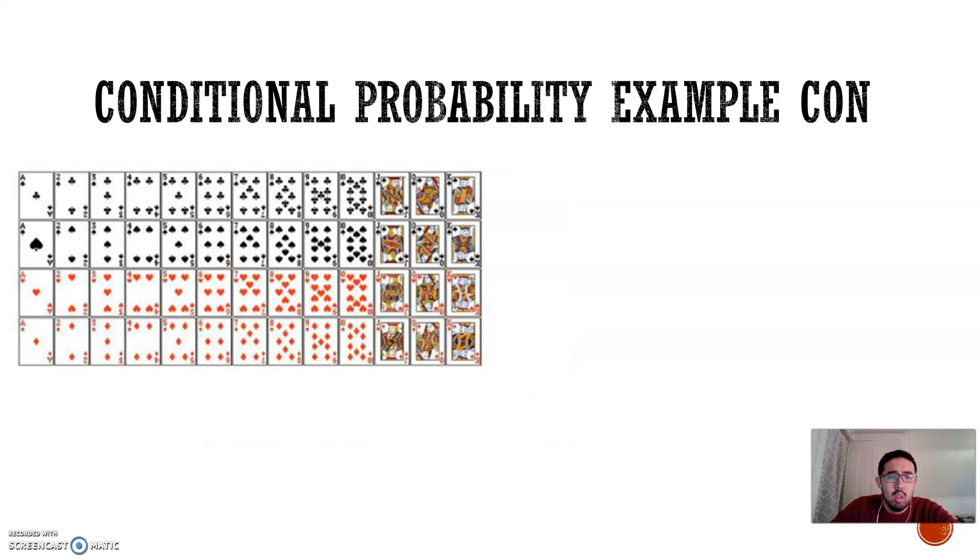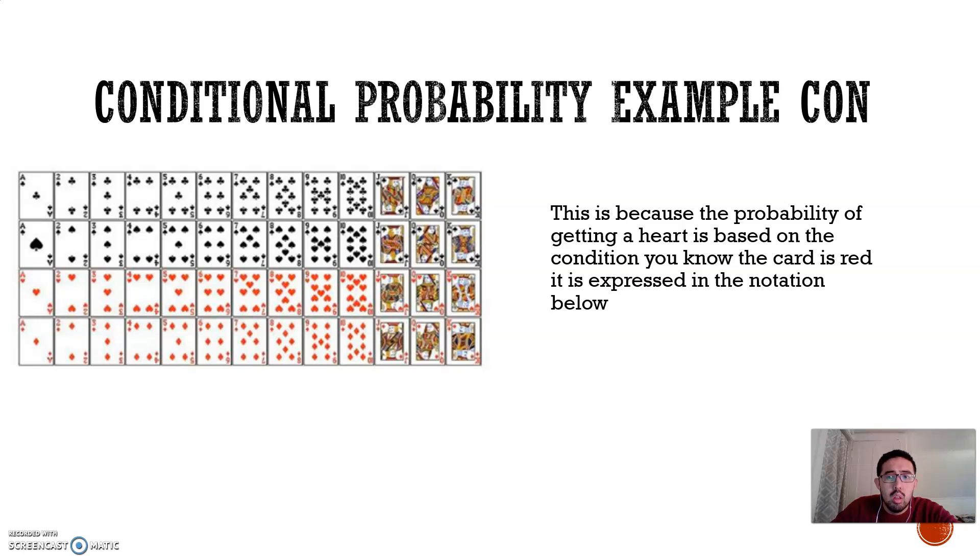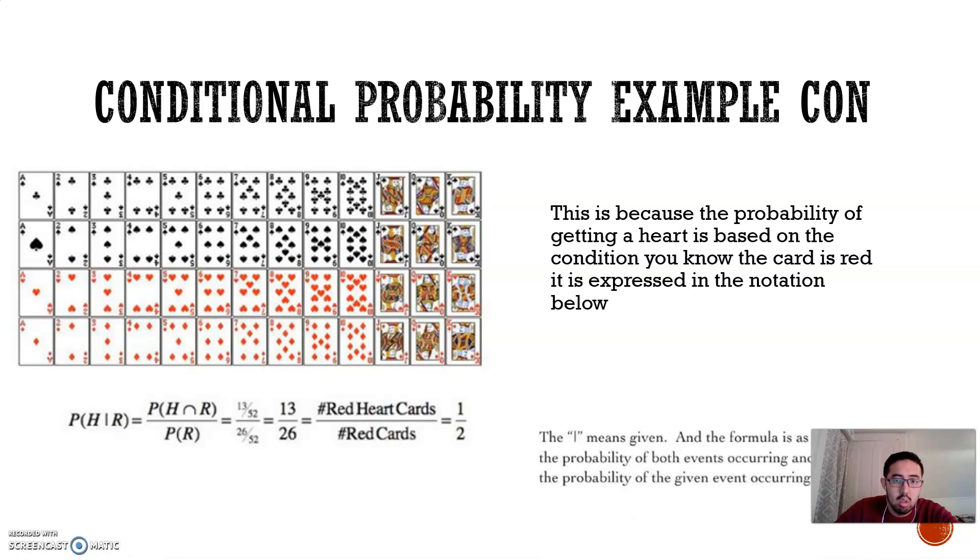Now, what does that mean? It's on the condition that the card is red. That means the only cards that it could possibly be is out of this. What happens then? It changes the probability to being out of what? Only the reds. Or, in other words, it would be 13 out of 26.